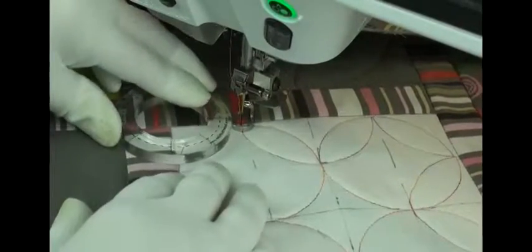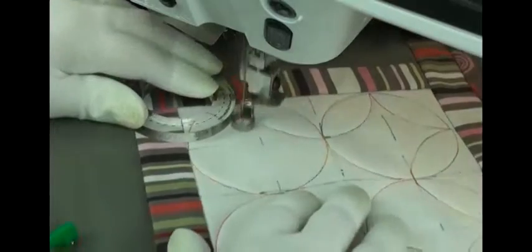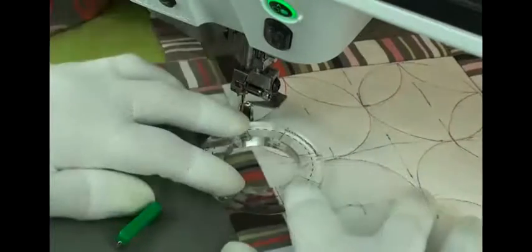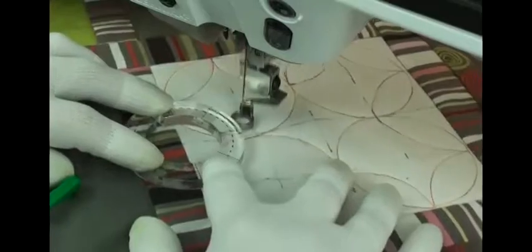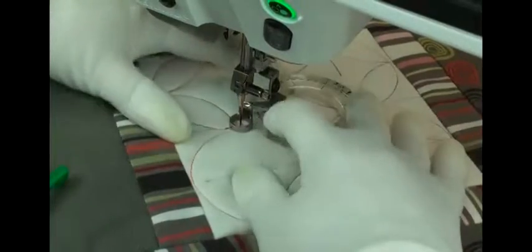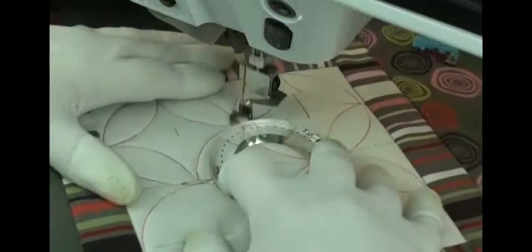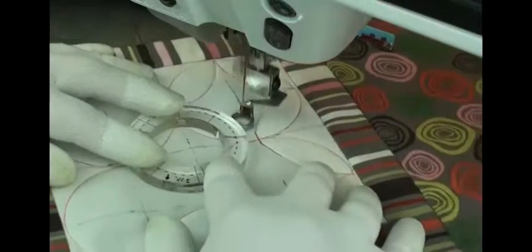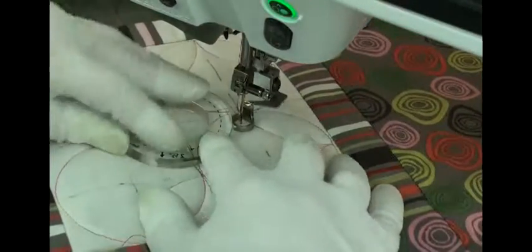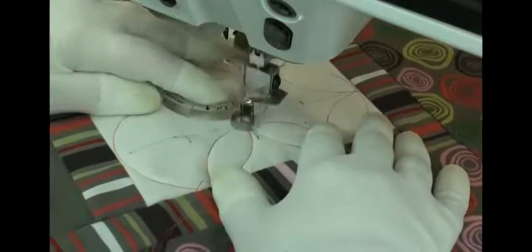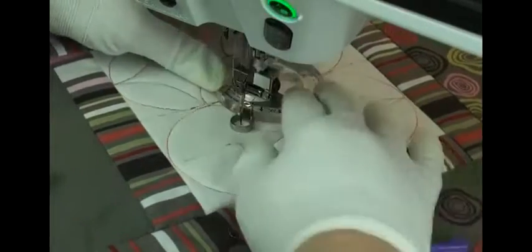Now quarter circle and rather than do the full half circle I'm going to stop right here in the center and do my center circle. By leaving that to last I make sure that it matches up with all of the other circles and I adjust the template as necessary.